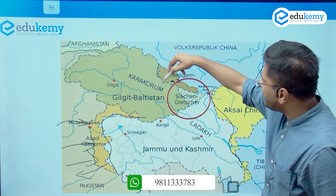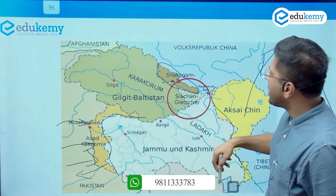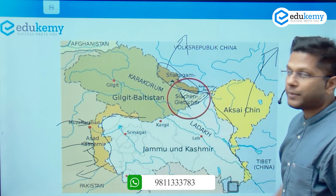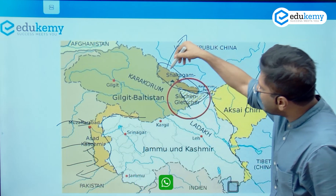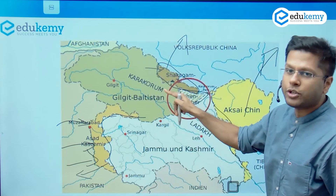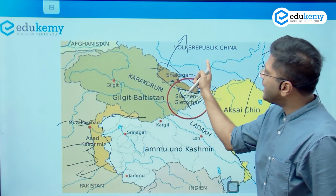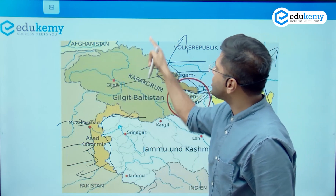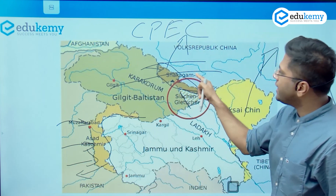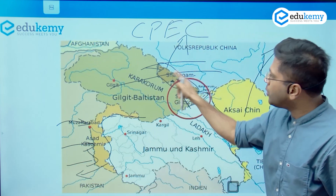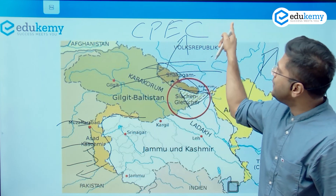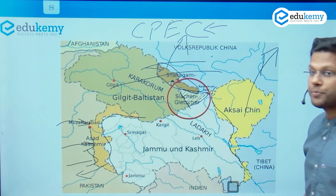Two important territories are Shaksgam Valley (also called Transkarakoram Valley) and Siachen Glacier. Shaksgam Valley is a part of India, but it was occupied by Pakistan and later given to China. This is the place from where CPEC — China-Pakistan Economic Corridor — is moving ahead. This is where India objects: why is Pakistan giving this part to China and why is China building CPEC? However, India has got a very strategic significance at Siachen Glacier because the Indian Army is present right there.